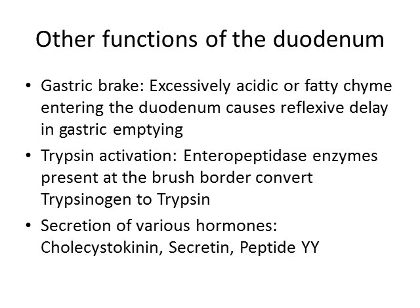Various hormones are also secreted by the duodenum, so the duodenum can actually be seen as an endocrine organ. It secretes cholecystokinin, which triggers contractions of the bile ducts and gallbladder and stimulates secretion of pancreatic enzymes. It also secretes secretin, which stimulates secretion of bile and pancreatic juice, and peptide YY, which has effects on the stomach and feelings of fullness.